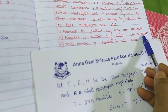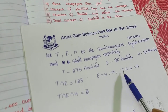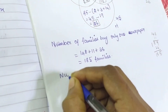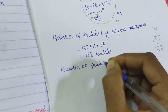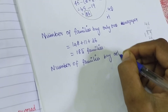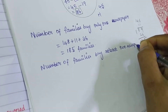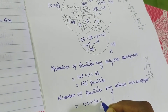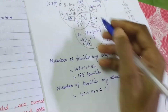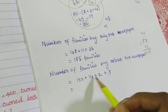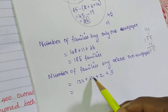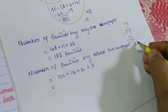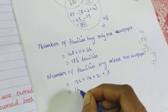Number of families reading at least 2 newspapers. At least 2 means Tamil and English, English and Hindi, Tamil and Hindi, and also all 3. So: 122 plus 14 plus 2 plus 3 equals 141. So 141 families read at least 2 newspapers.